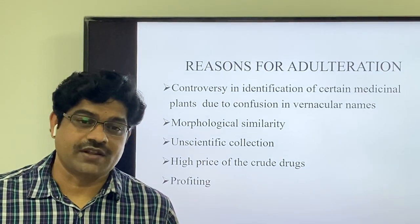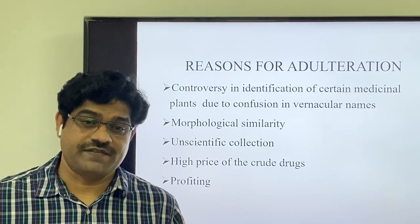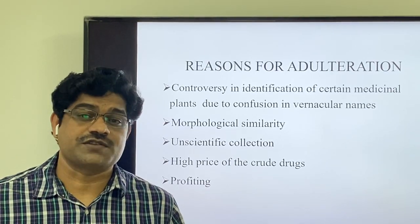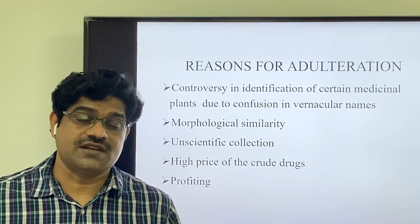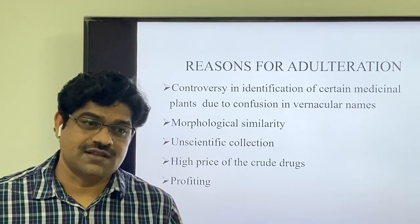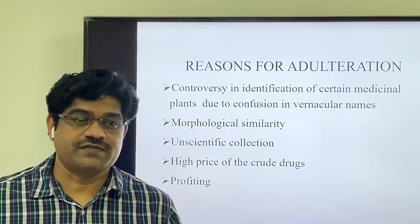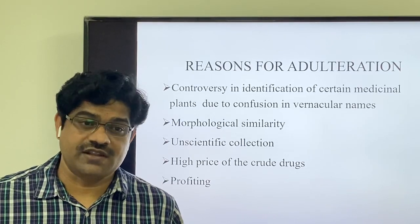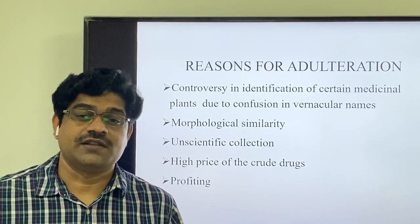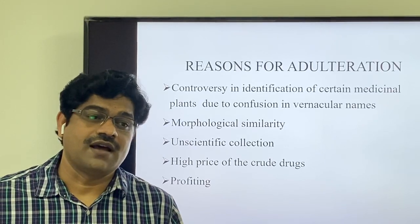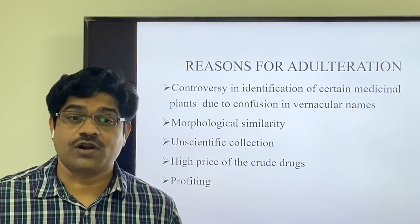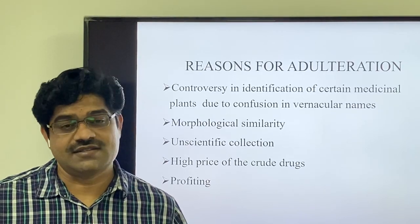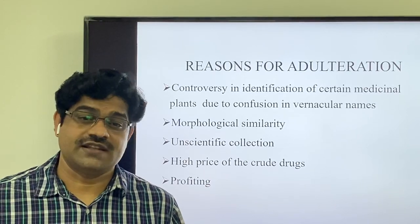There are many reasons for adulteration, but a few key ones are listed here. The first is controversy in the identification of certain medicinal plants due to confusion in vernacular names. Some plants, because of their morphological similarity, were given similar names in local languages, causing confusion in identification — for example, Bramhi, Punarnava, and Shankhpushpi. There are many other plants where such controversy in identification exists.